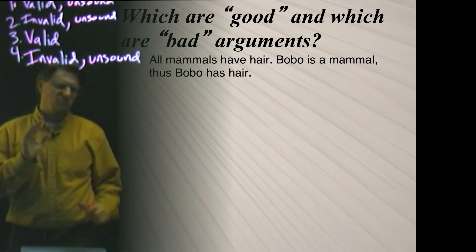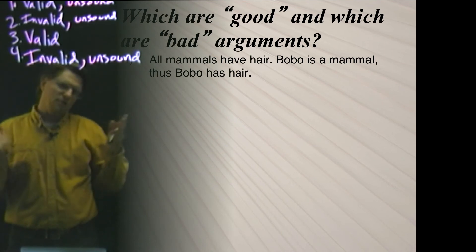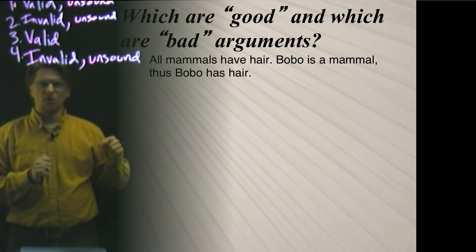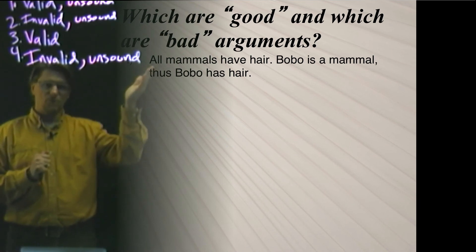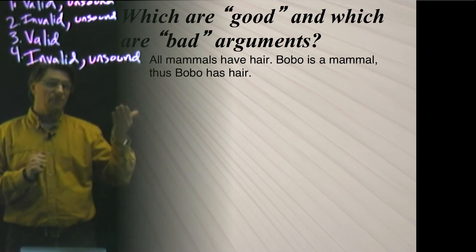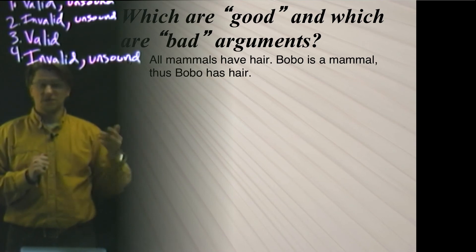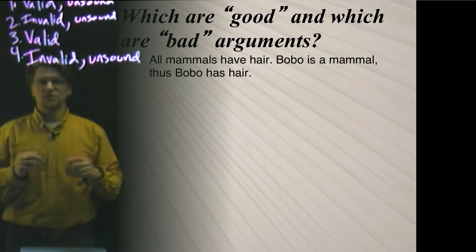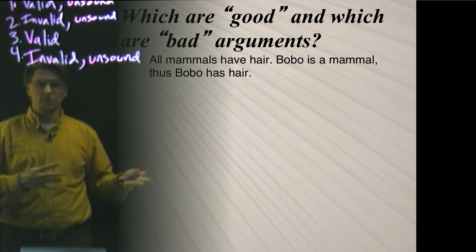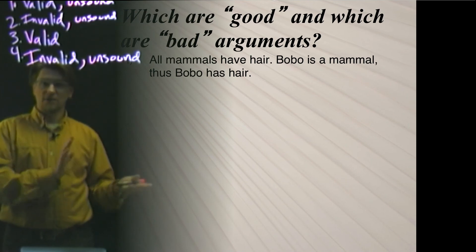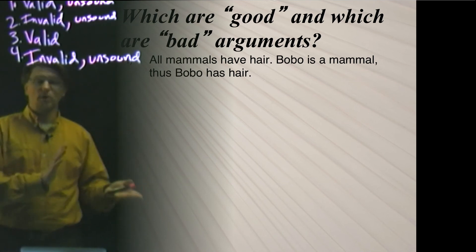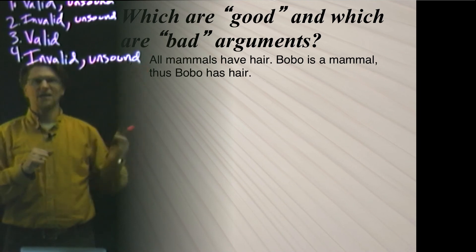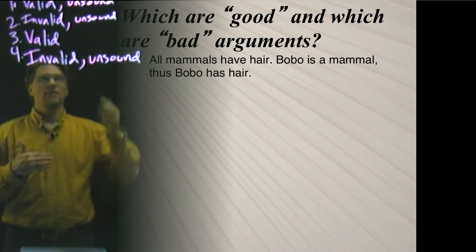Just to illustrate further: let's stipulate that all mammals had hair — say, in the future when dolphins and whales are extinct. Would it then be sound or unsound? We'd also have to ask: is Bobo actually a mammal? Without knowing what Bobo is, we can't say. If Bobo turned out to be an iguana, the argument would be unsound. If Bobo turned out to be a chimpanzee, it would be true that Bobo is a mammal, and given our stipulation, the argument would be sound. But given the real world today, it is unsound.